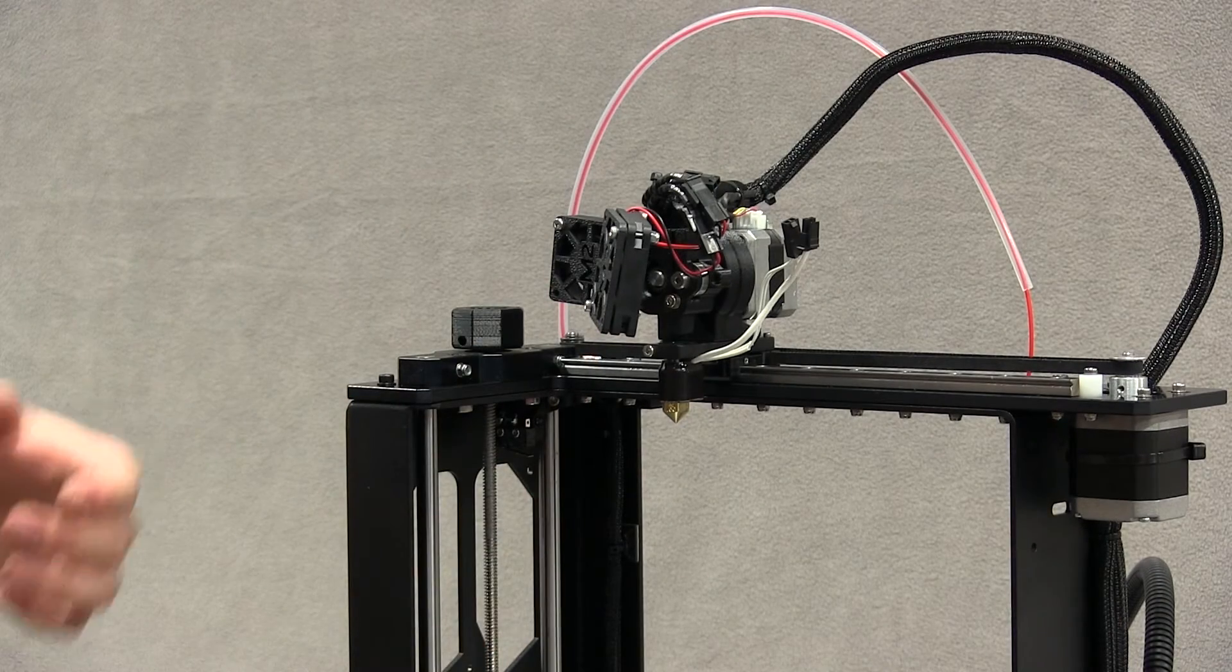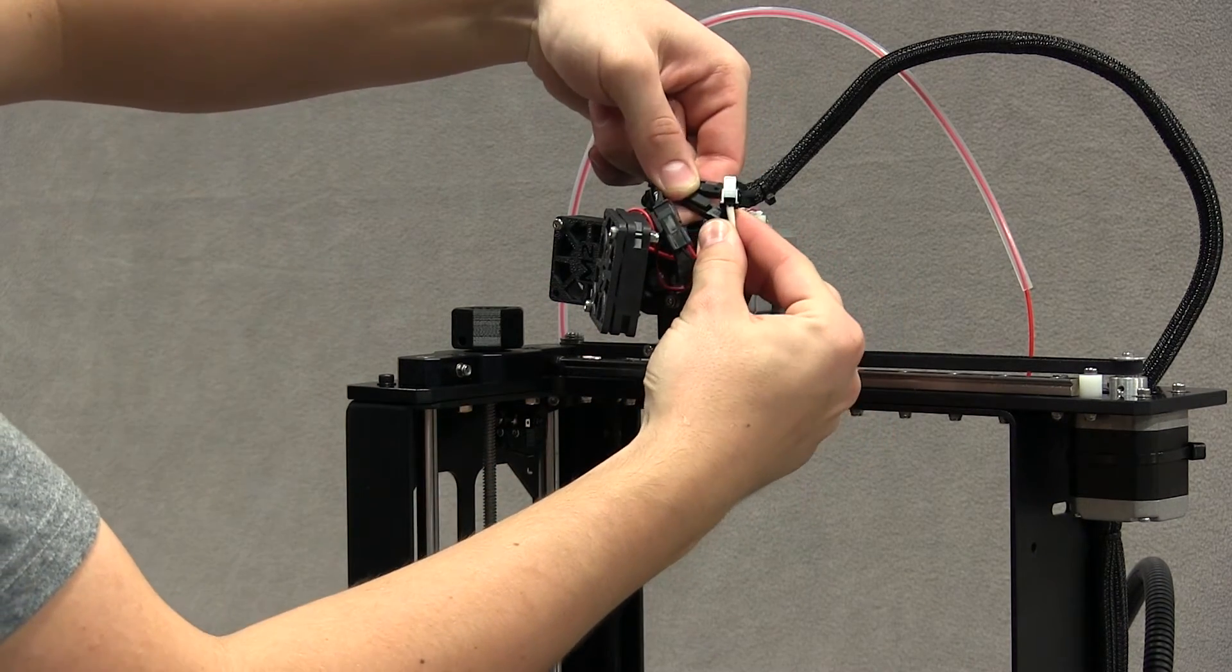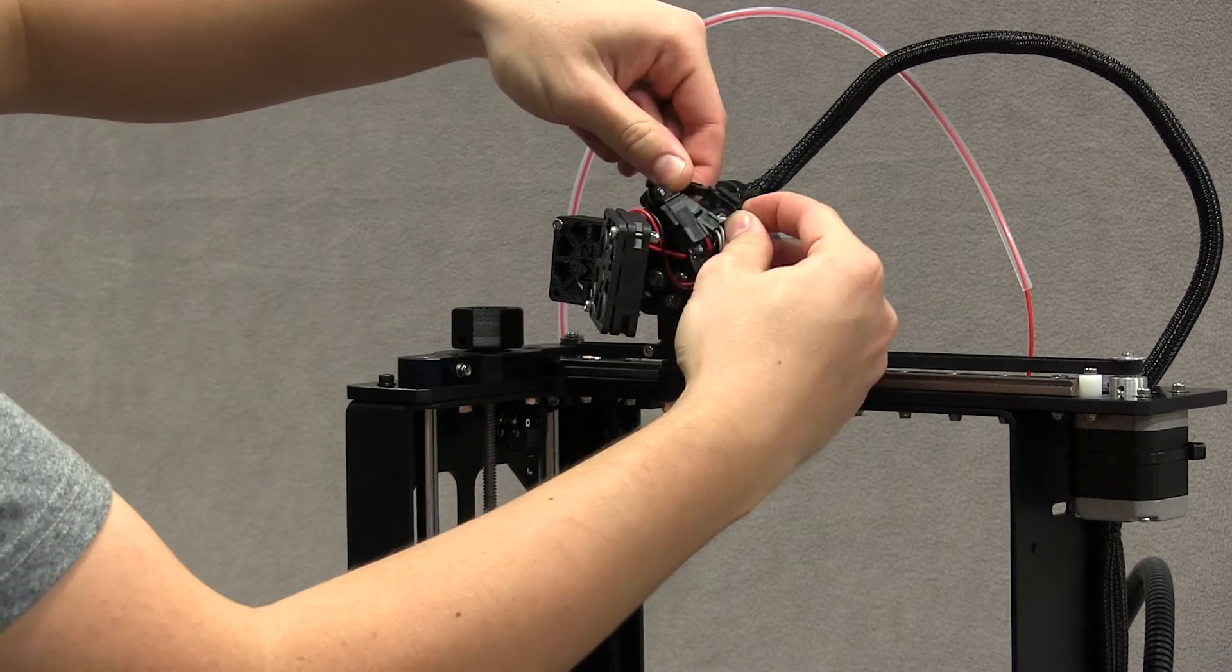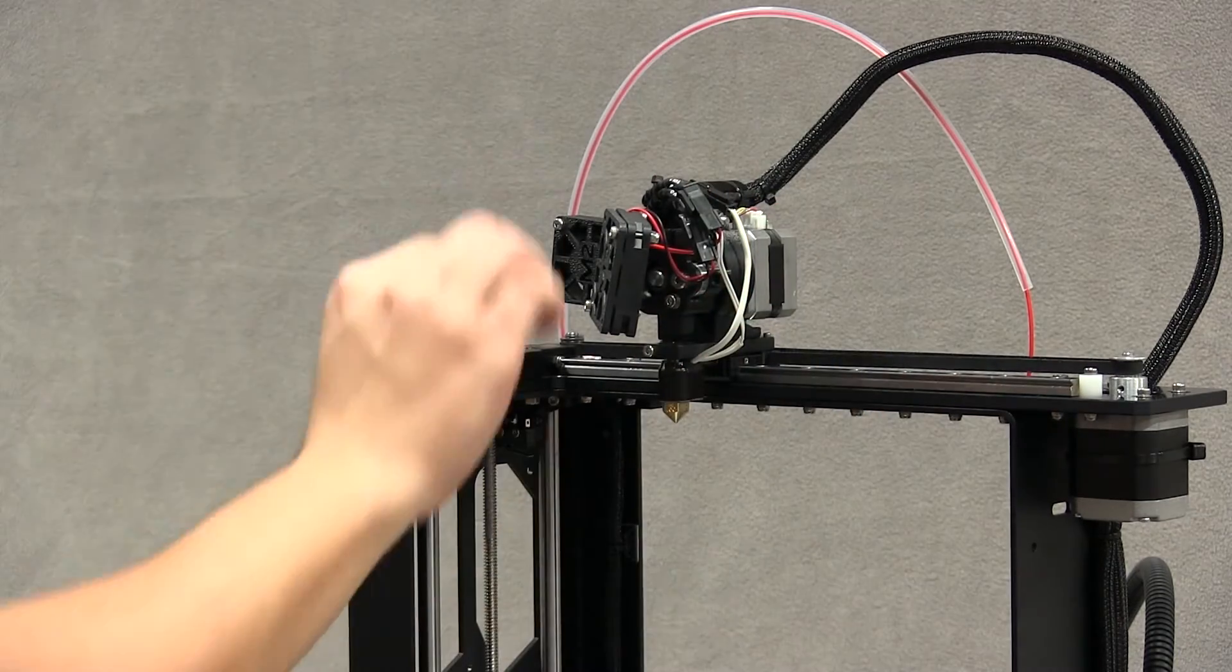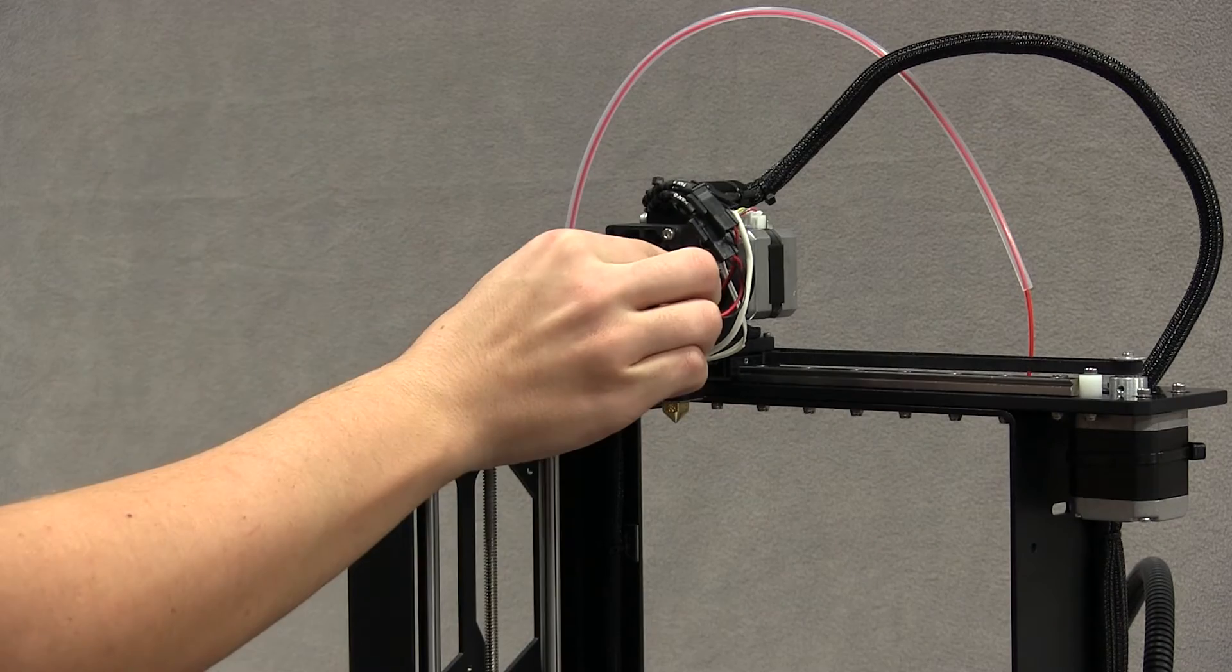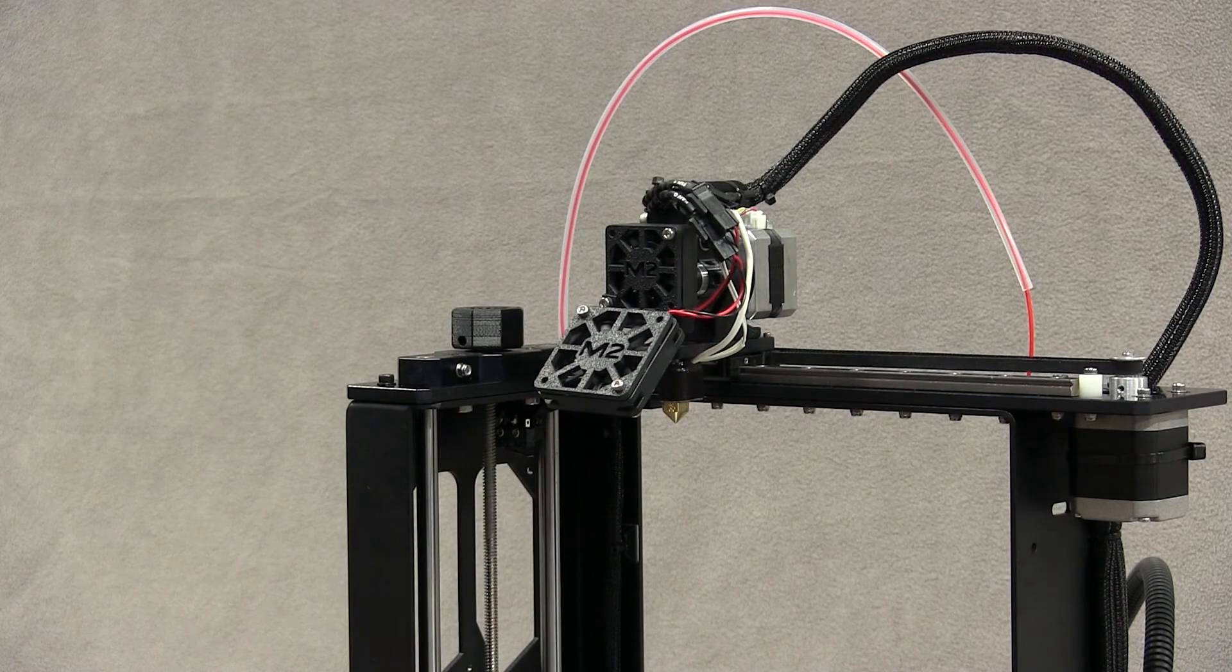Connect the wires of the hotend. The connectors can only match in one direction. Rotate the fans back down into the operating position and install a zip tie to keep everything neat and orderly.